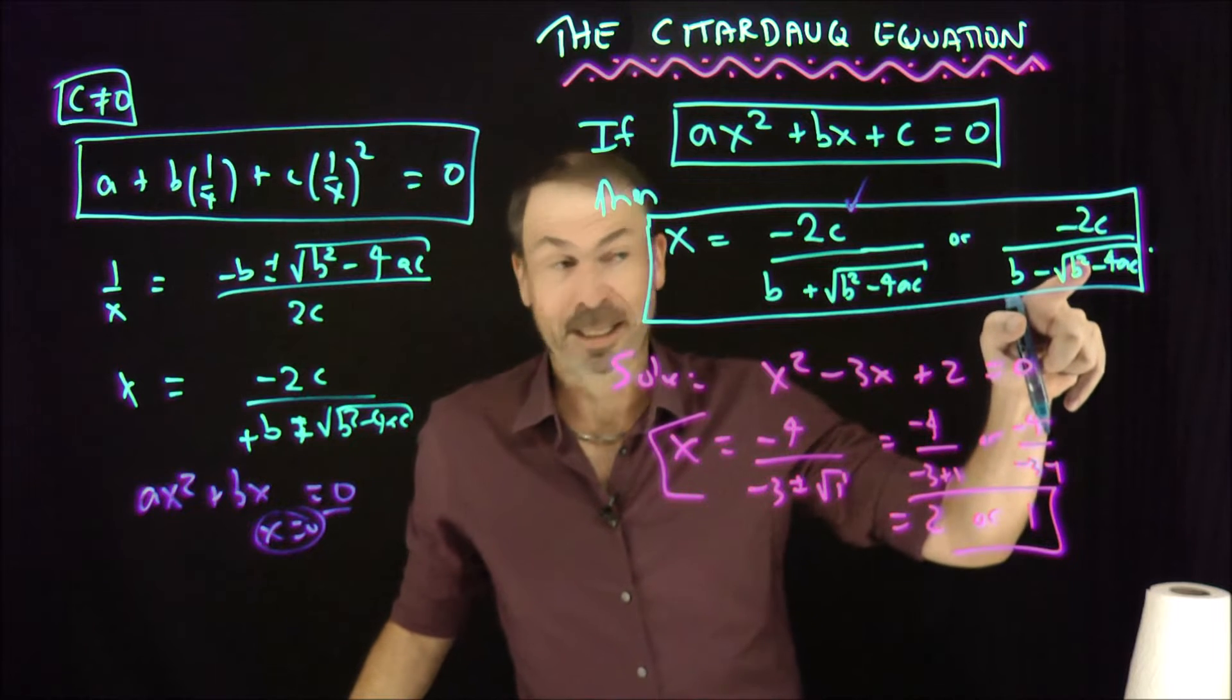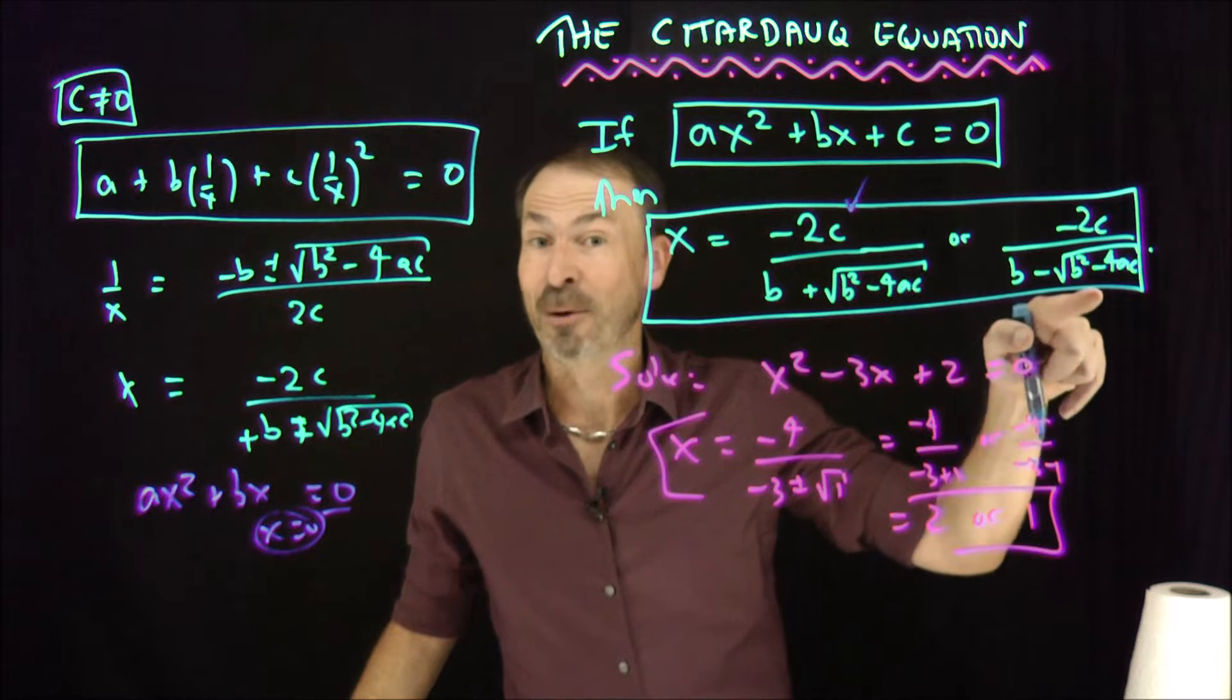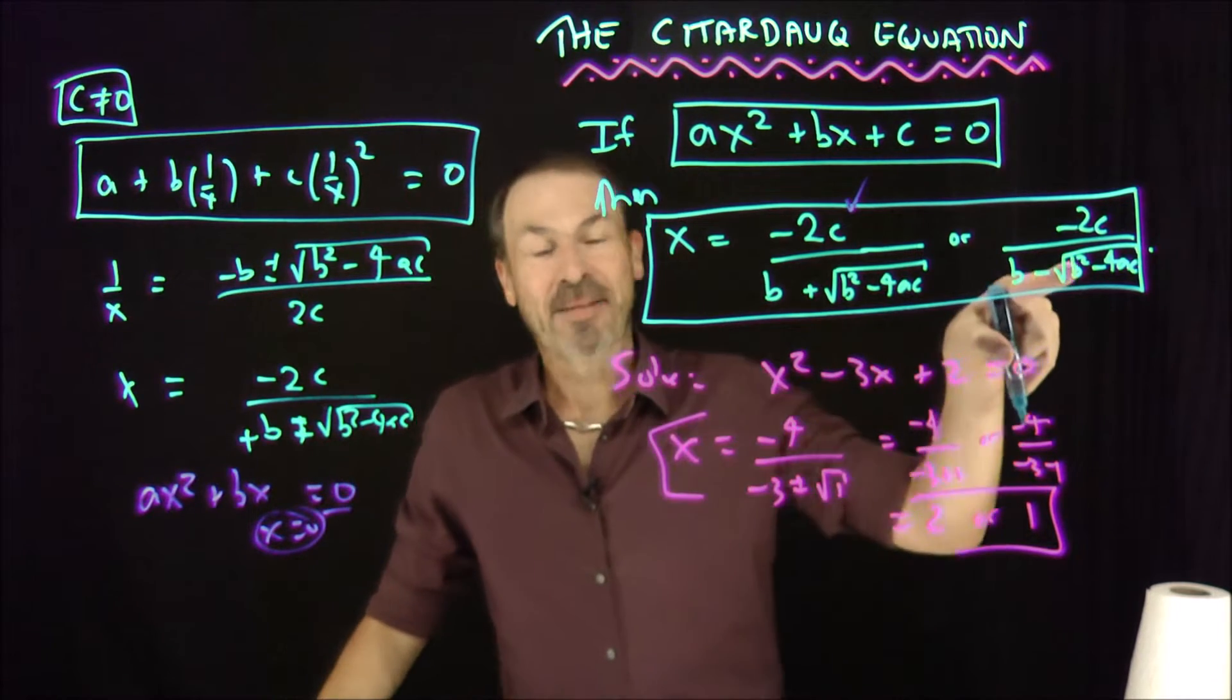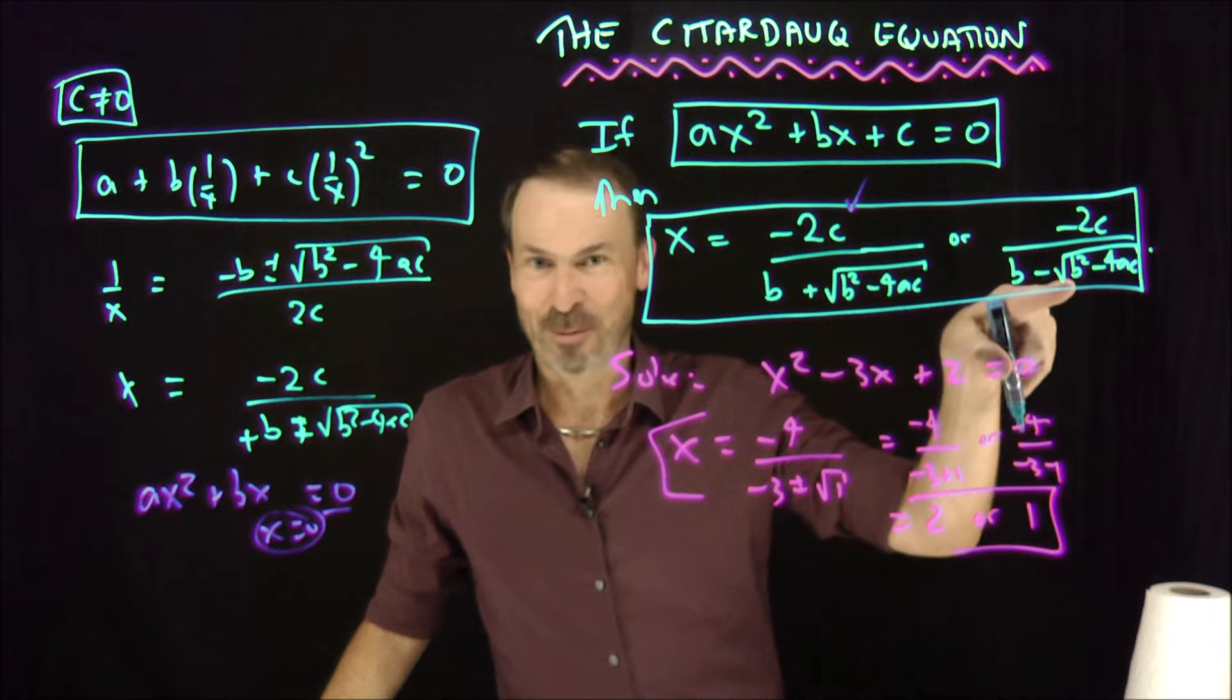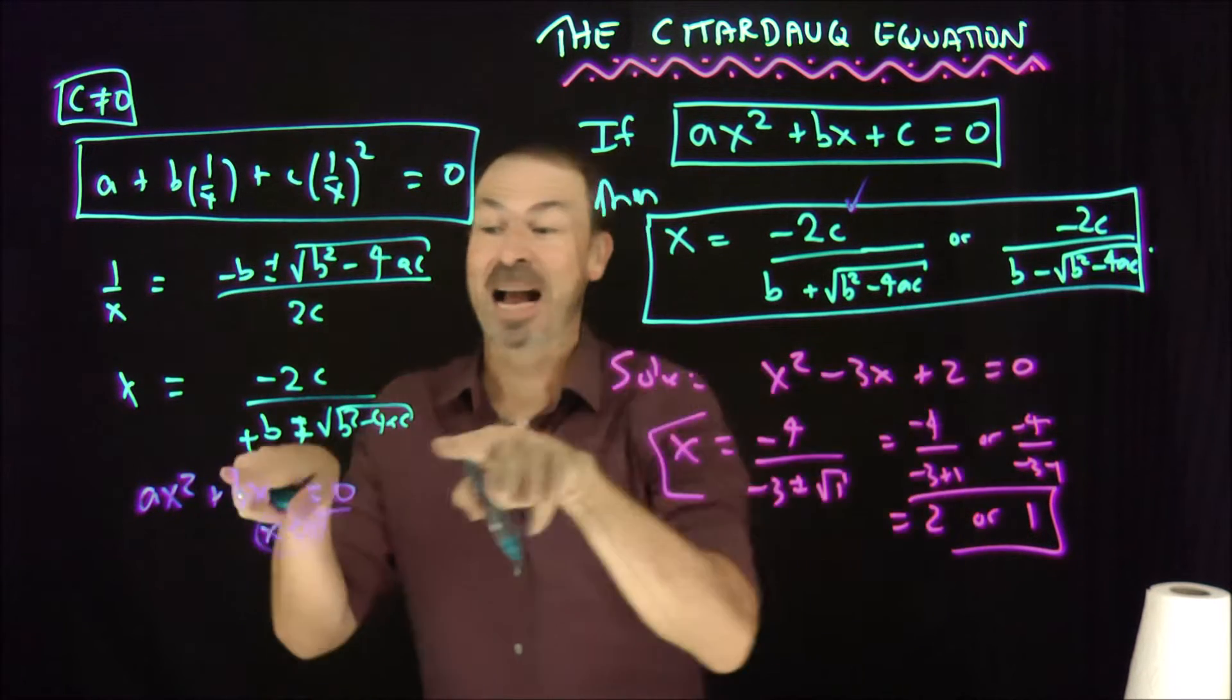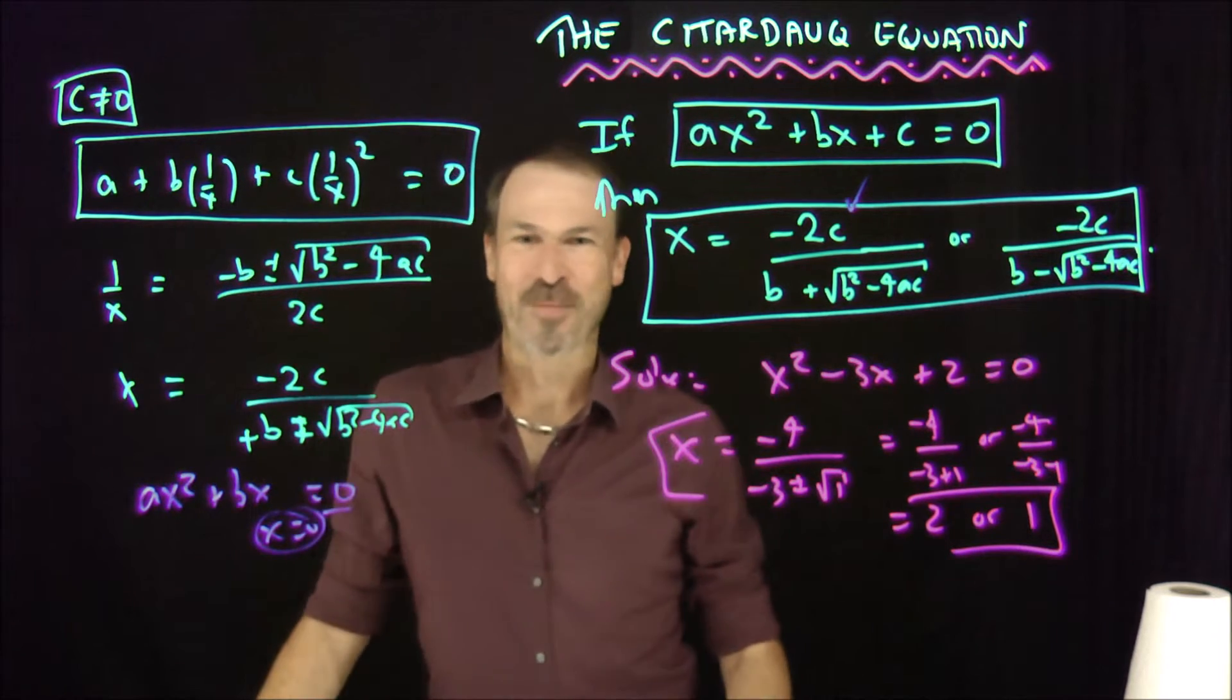This part of the Ceta-Dorc equation is strange. When c is zero, it wants to be zero on the top and also zero on the bottom. So actually, calculus students, you could take the limit of this formula as c tends to zero and use L'Hopital's rule to see if it gives you the other solution to the quadratic. And it does.